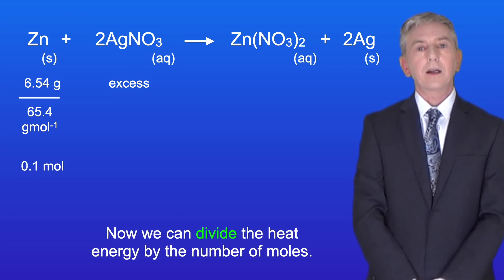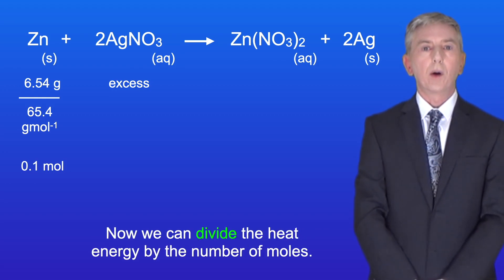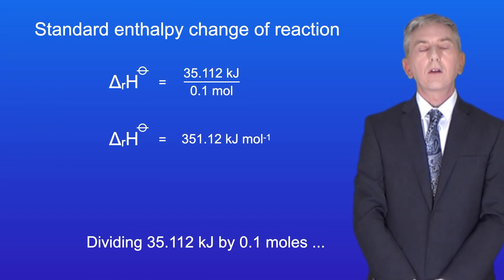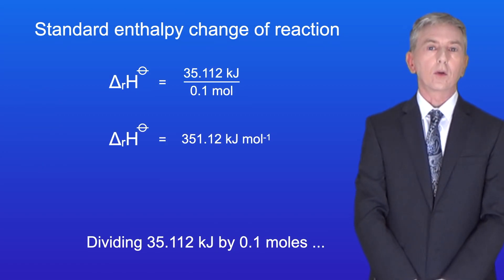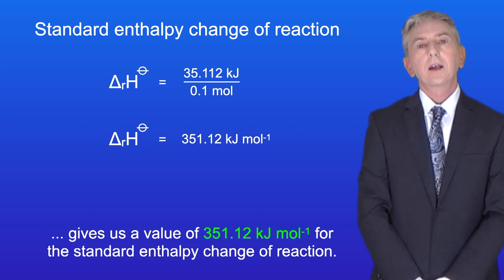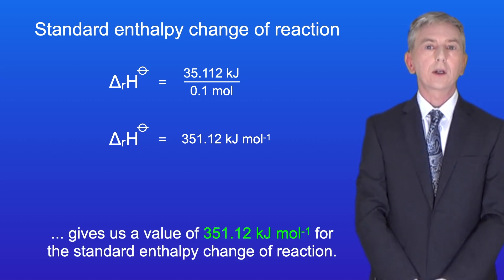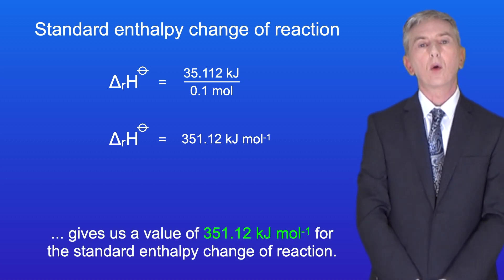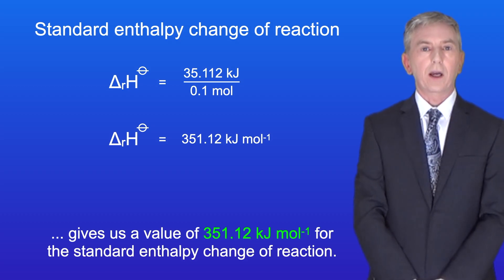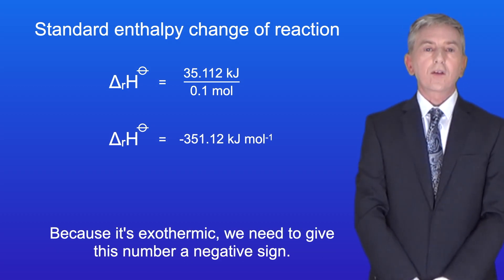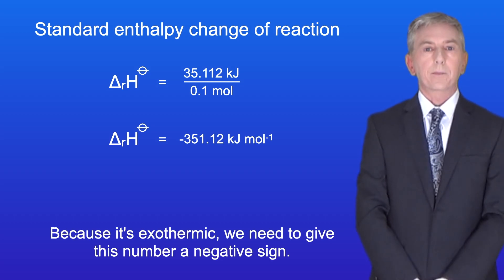Now we can divide the heat energy by the number of moles. Dividing 35.112 kilojoules by 0.1 moles gives us a value of 351.12 kilojoules per mole for the standard enthalpy change of reaction. And because it's exothermic, we need to give this number a negative sign.